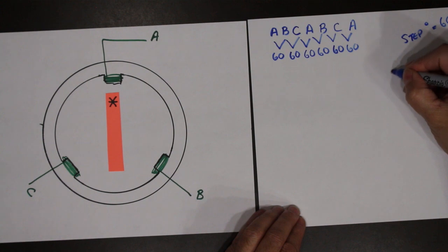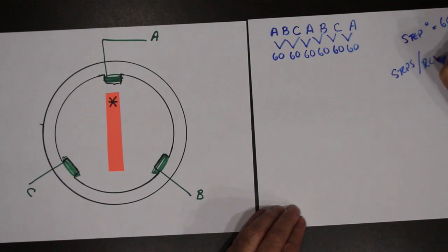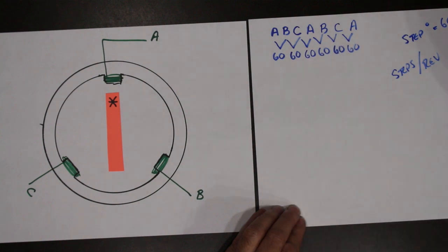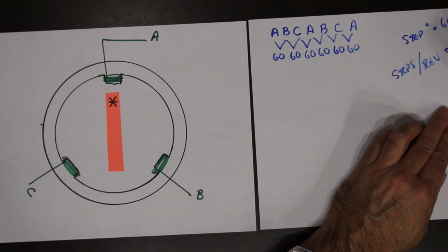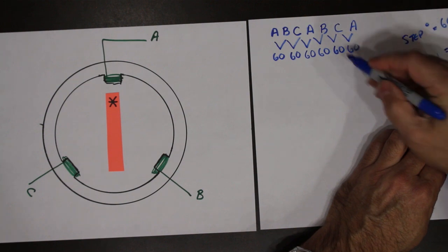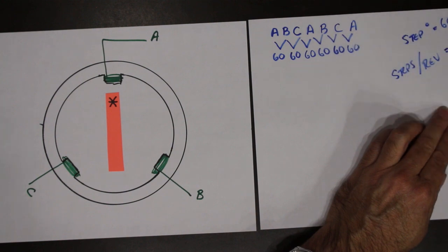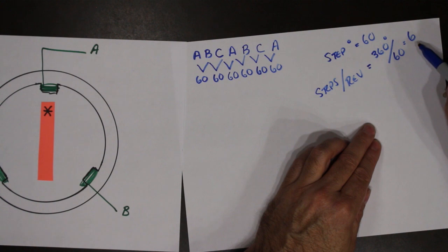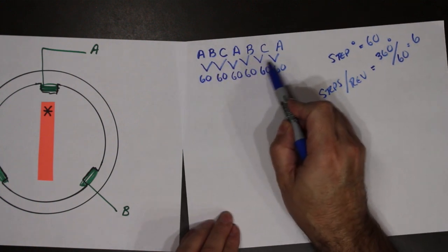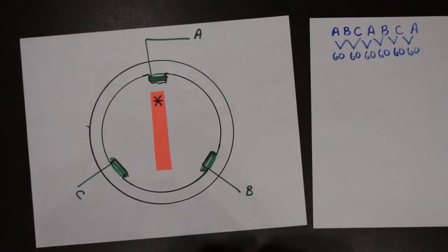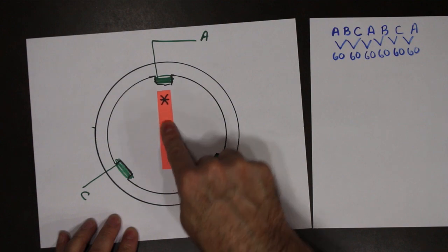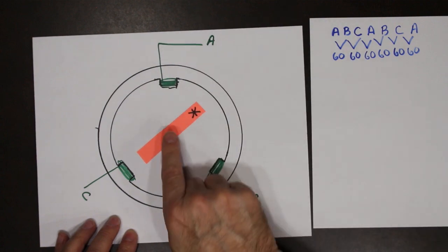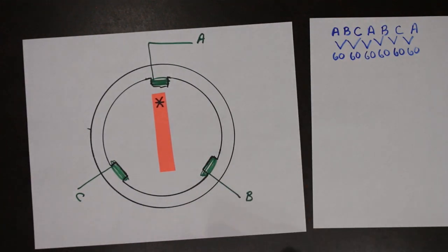My steps per revolution: I count one, two, three, four, five, six steps. So I have 360 degrees of rotation divided by my step angle of 60, which gives me six steps. So 360 divided by the step angle gives me six steps per revolution. Starting with the star at A, going this way: there's one, two, three, four, five, six steps to go around one complete time.